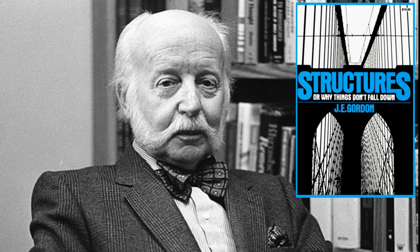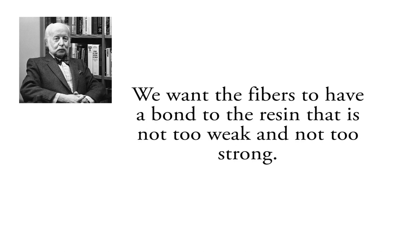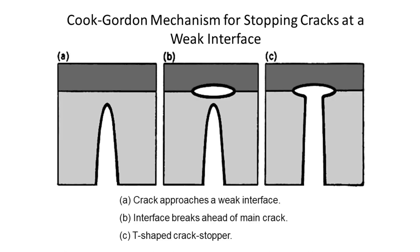Physics and reality beat marketing hype every time. We refer to the work of recognized material scientists. As the famous material scientist J.E. Gordon explains, we do not want too high a bond strength of the fibers to the resin. Although high bond strength might increase the flexural strength of the fiber-reinforced structure, it has the very unfortunate side effect of creating brittleness. Gordon explains that we want the fibers to have a bond to the resin that is not too weak and not too strong. This allows cracks to deflect when they reach the fibers, which absorbs energy and prevents the rapid propagation of the crack. Ribond has an ideal mid-strength bond to the composite resins that maximizes its fracture toughness.